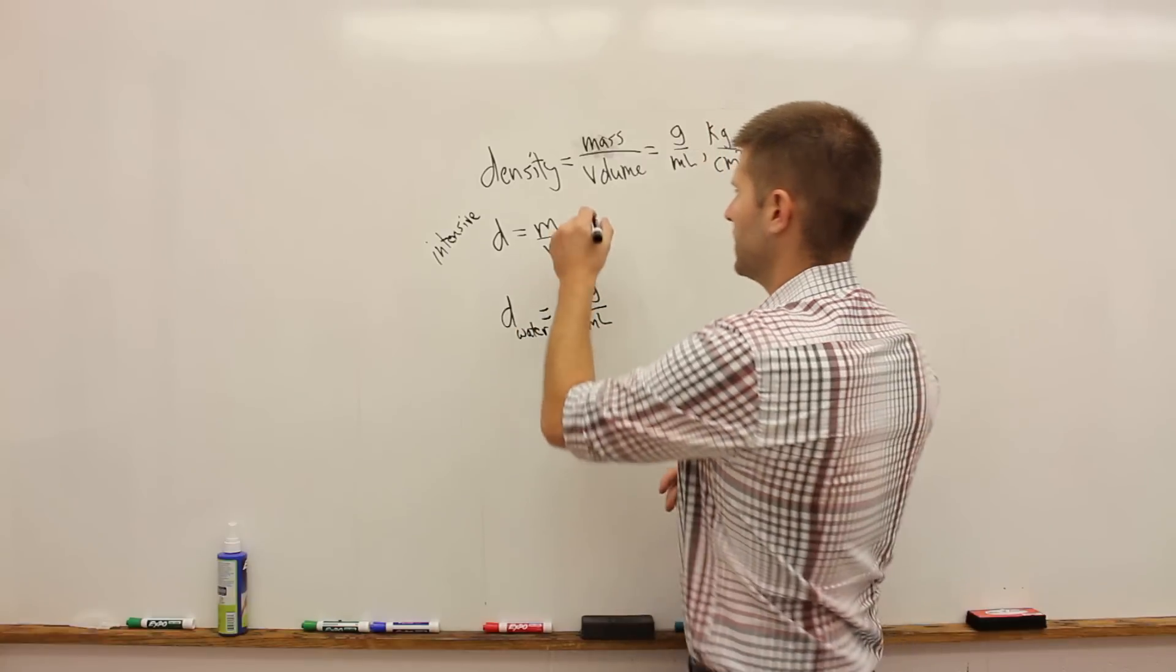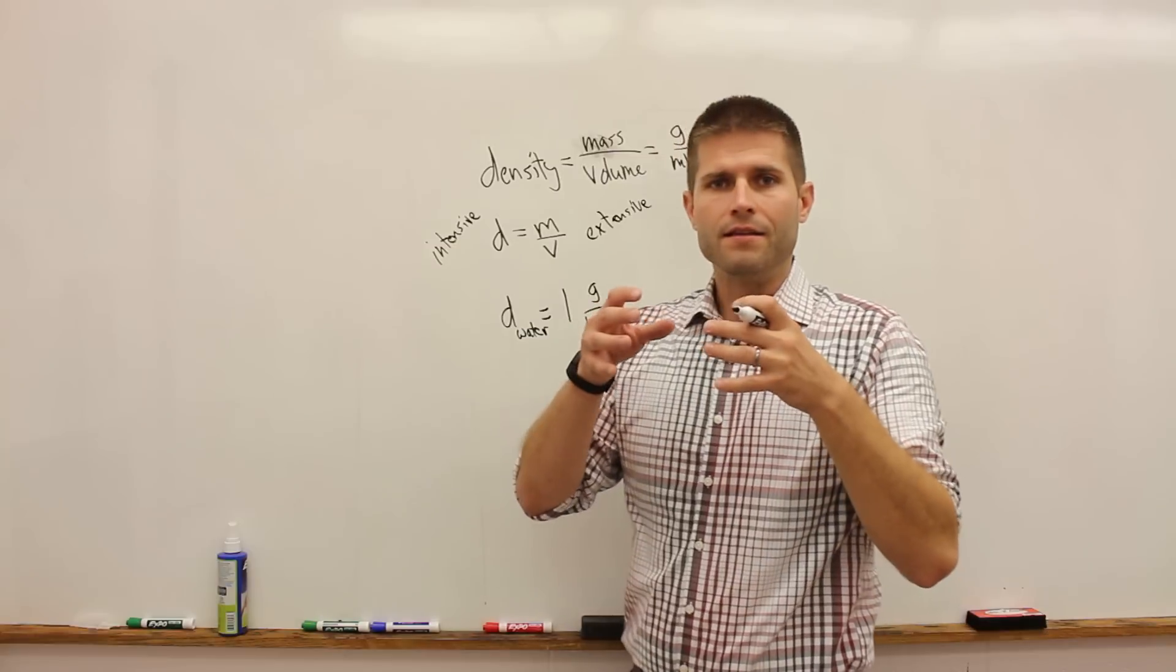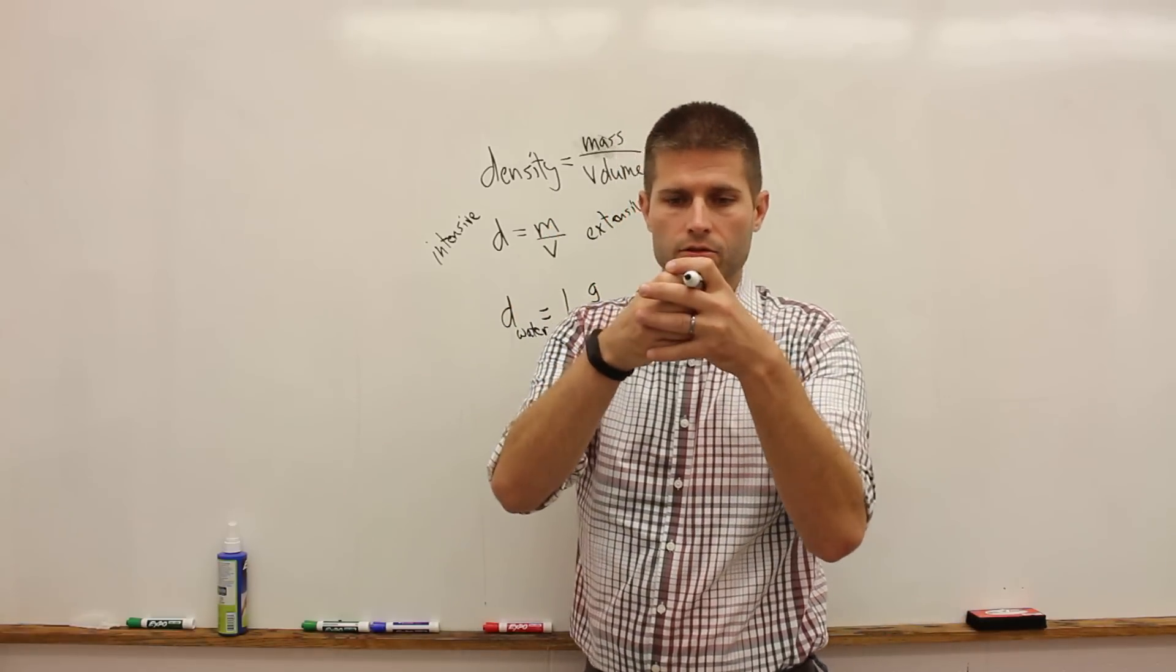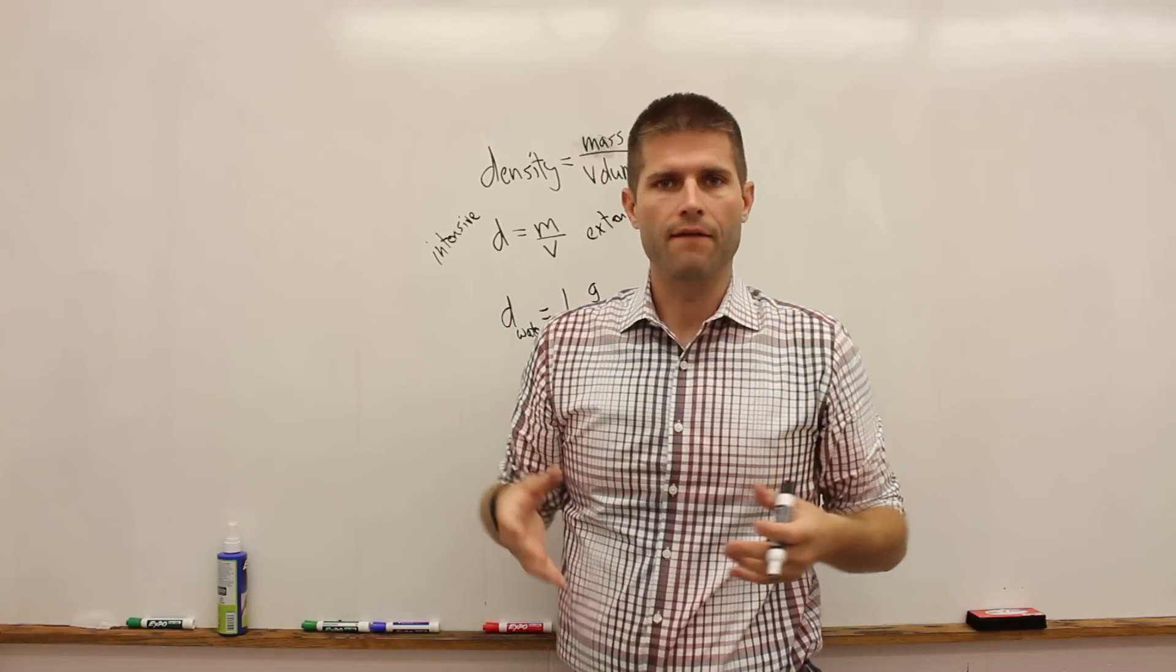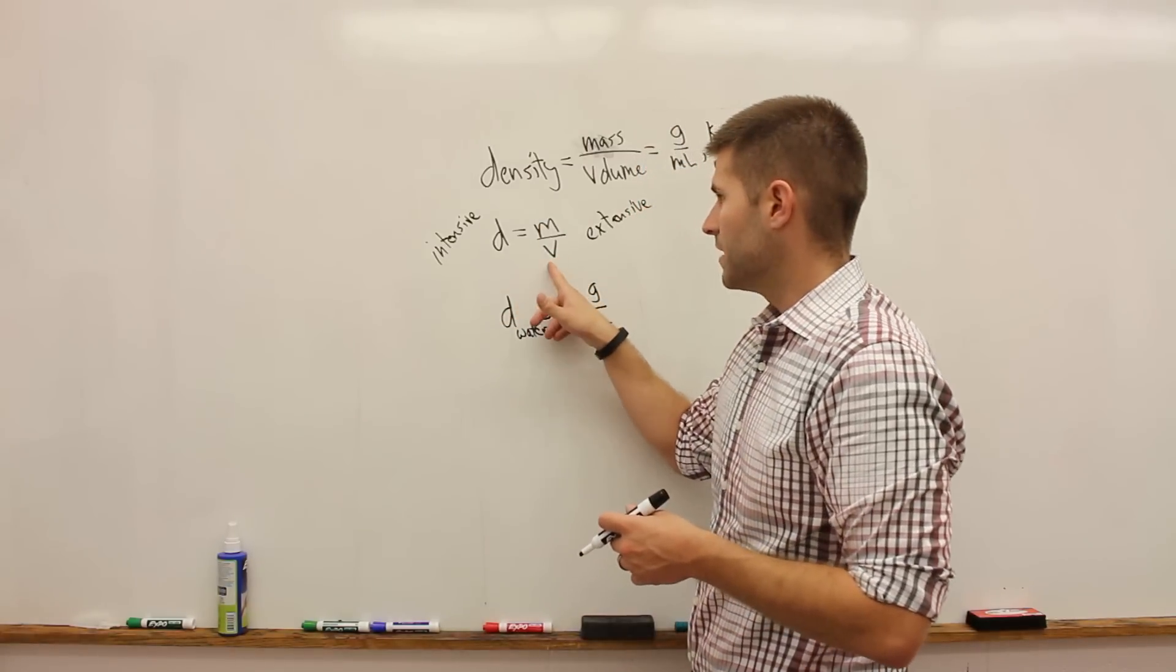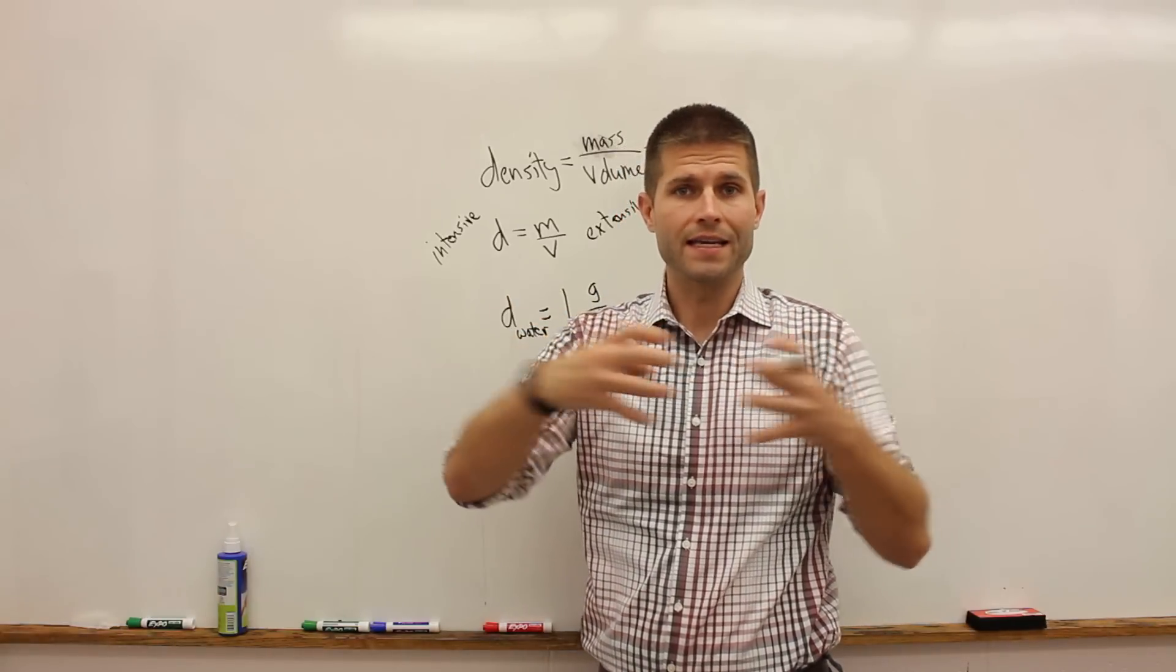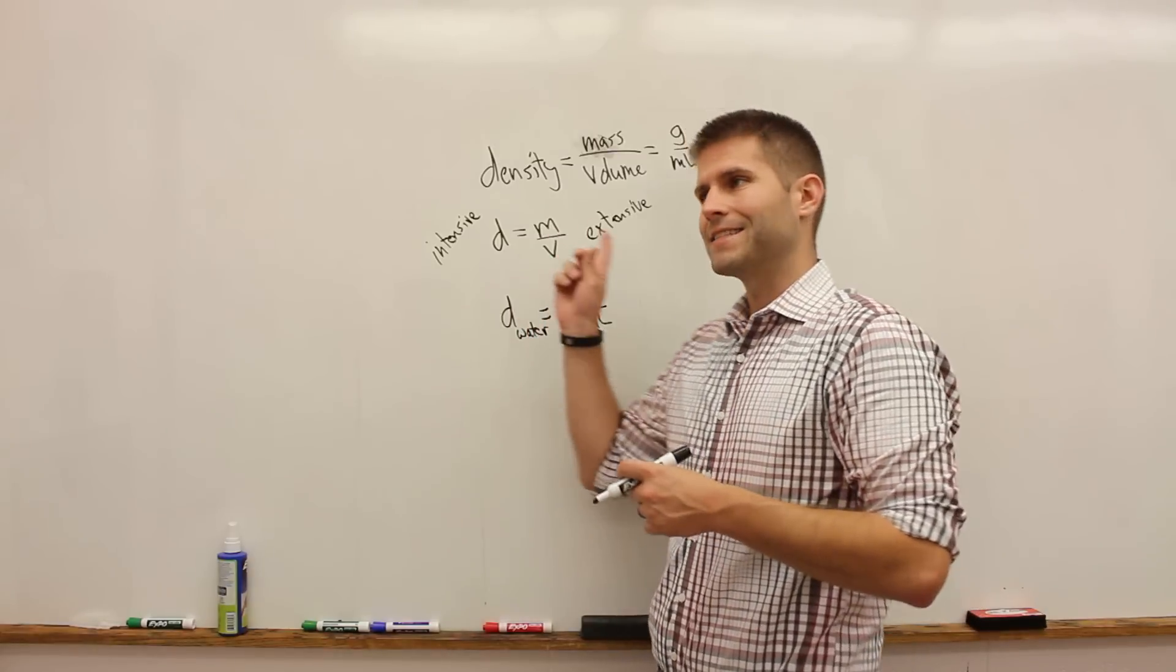Now everything that makes up density is actually an extensive property, so everything on the right hand side is called extensive. What's an extensive property? The value or property changes based on the amount of material that's present. So the mass of an object - let's say we had a little cube of gold and we started adding more gold - well that cube becomes heavier, so the mass does change. The volume is also extensive - if I had that cube of gold and started adding more gold to it, the volume changes and expands and becomes bigger.